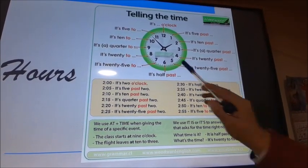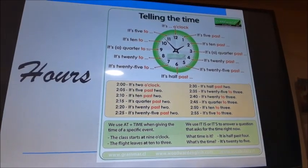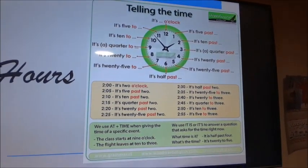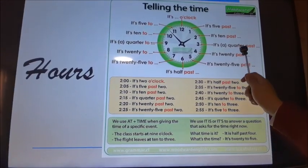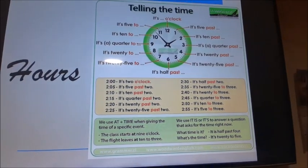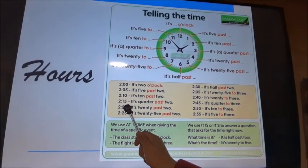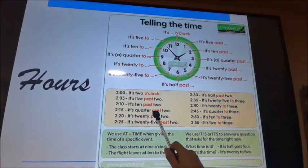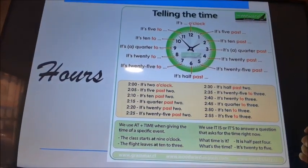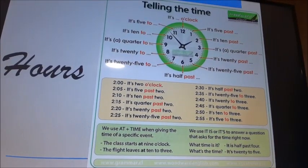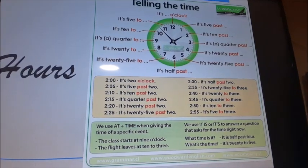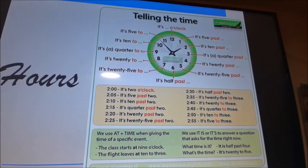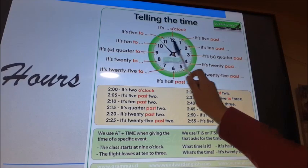Normalmente digo 'fifteen' cuando han pasado quince minutos, pero de manera formal digo 'it's a quarter past' o 'it's a quarter to'. Por ejemplo: dos y cuarto — 'it's a quarter past two' — han pasado quince minutos de las dos. Por otra parte: dos y cuarenta y cinco, o sea falta un cuarto para las tres — 'it's a quarter to three'.